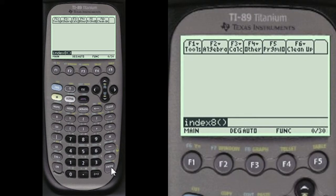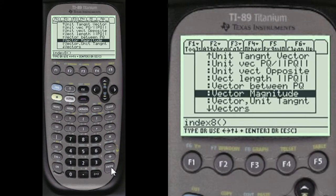So let's do an index 8 to get to my menu. I'm already at vector magnitude as we scroll down to the alphabetical menu.